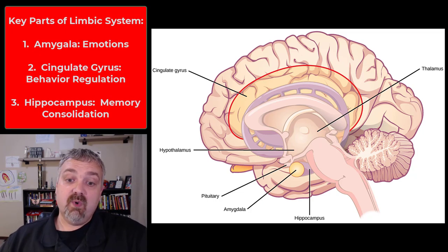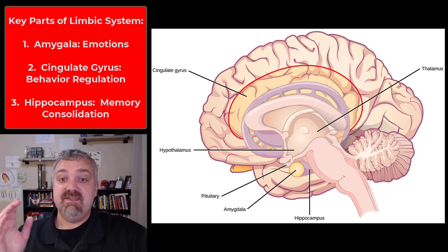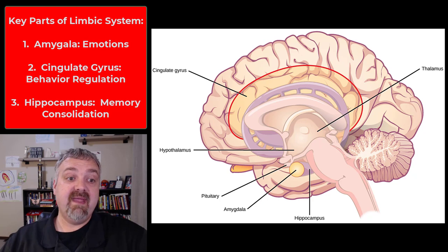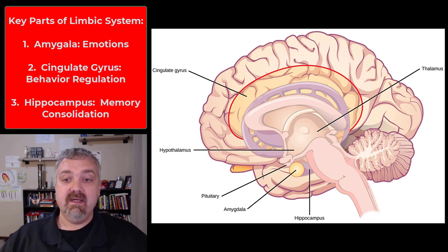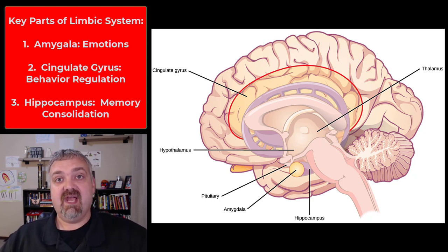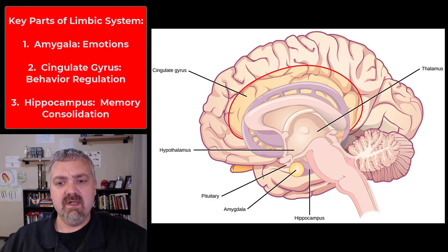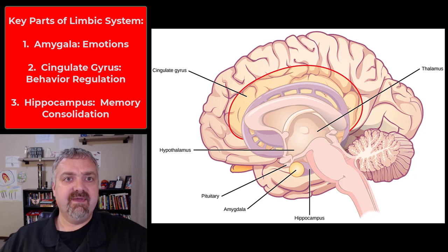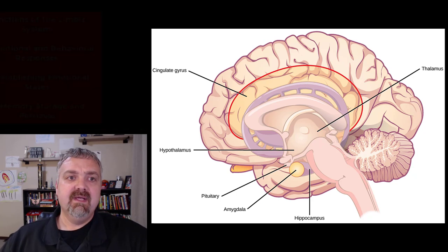The parts of the limbic system we're going to focus on here: we'll talk about the amygdala, the cingulate gyrus, and the hippocampus as the three main ones. There are a couple more I'll bring up at the end — the dentate gyrus and the parahippocampal gyrus — but they're not that big of a deal. So the amygdala, the cingulate gyrus, and the hippocampus are the three key ones.